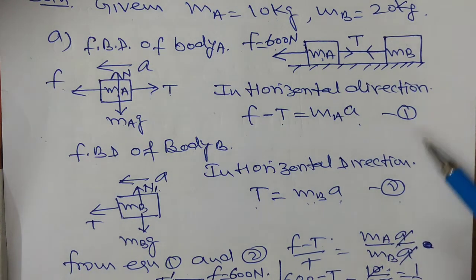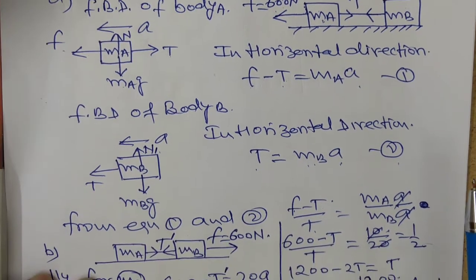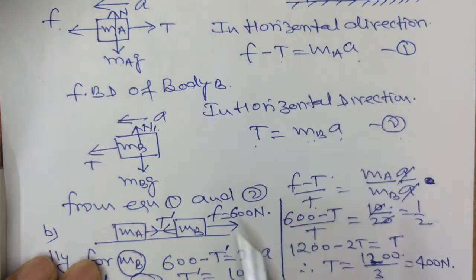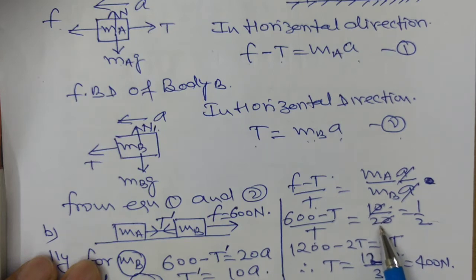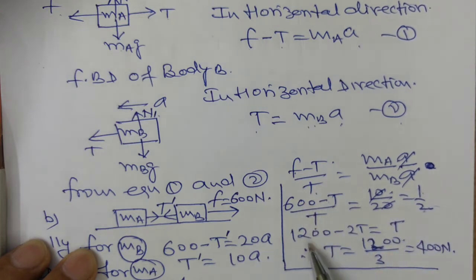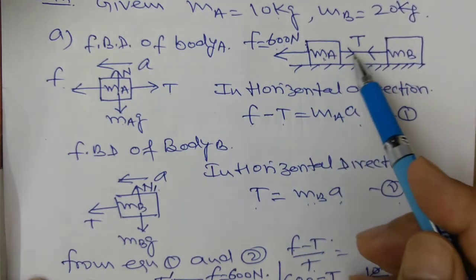Now we divide equation 1 by equation 2: (F minus T) upon T equals (MA into A) upon (MB into A). Acceleration cancels out. Putting F equal to 600, we get (600 minus T) upon T equals 10 upon 20, which simplifies to 1 by 2. Cross multiplying: 2 into (600 minus T) equals T, giving 1200 minus 2T equals T, so 3T equals 1200, therefore T equals 400 N. When force is applied on body A, the tension in the string is 400 N.